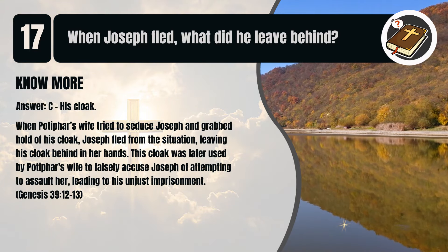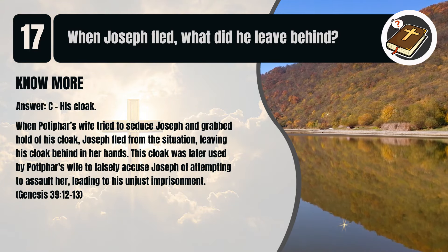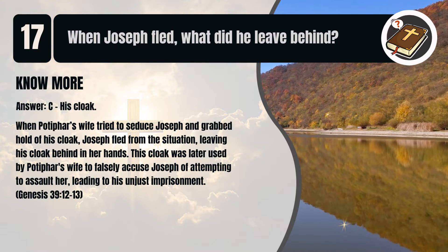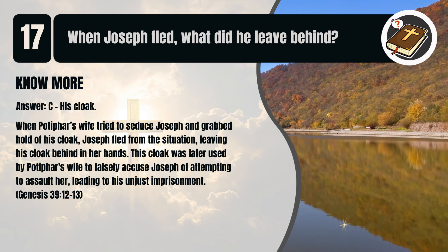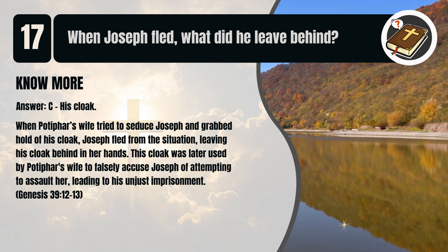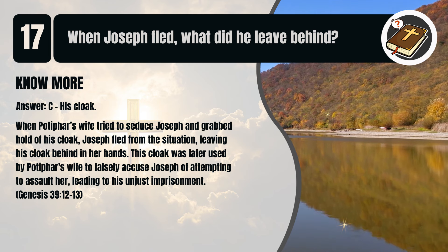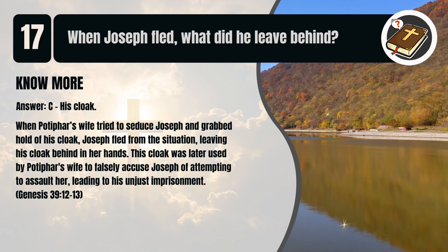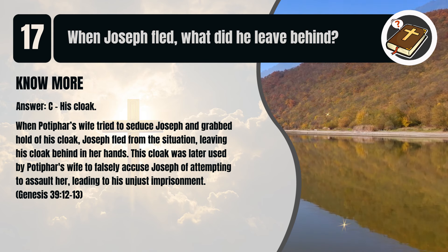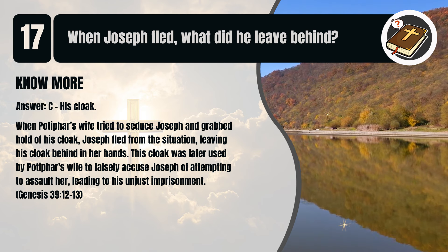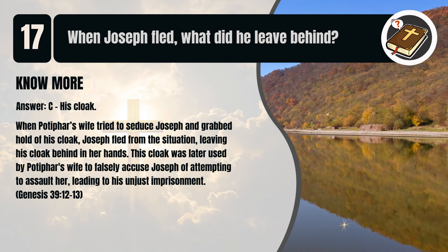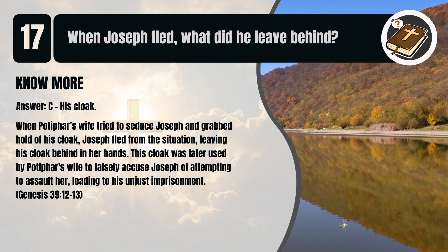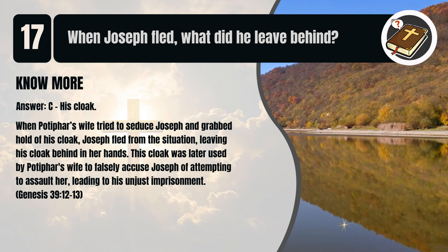That's C. His cloak. When Potiphar's wife tried to seduce Joseph and grabbed hold of his cloak, Joseph fled from the situation, leaving his cloak behind in her hands. This cloak was later used by Potiphar's wife to falsely accuse Joseph of attempting to assault her, leading to his unjust imprisonment. Genesis chapter 39 verses 12 to 13.